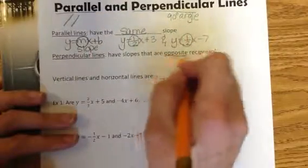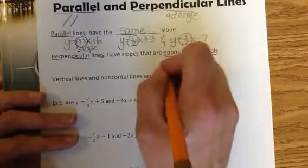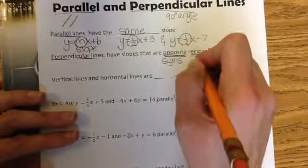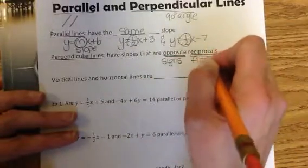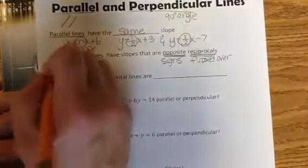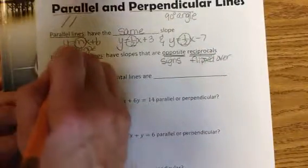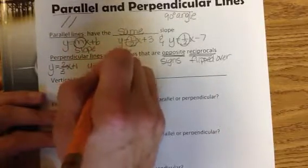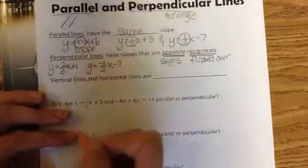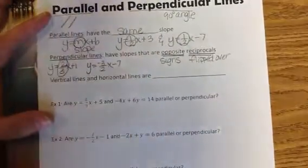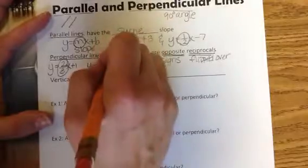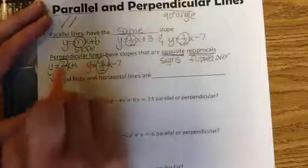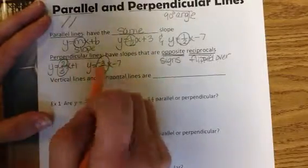Perpendicular lines have slopes that are opposite reciprocals. Opposite means signs — one has to be positive, one has to be negative. Reciprocal means that it's flipped over. For example, y equals 2 thirds x plus 1 and y equals negative 3 over 2 x minus 7 would be perpendicular, because one has a slope of 2 thirds and the other has a slope of negative 3 halves. One's positive, one's negative, so they're opposites. And if you take 2 thirds and flip it over, you get 3 over 2.